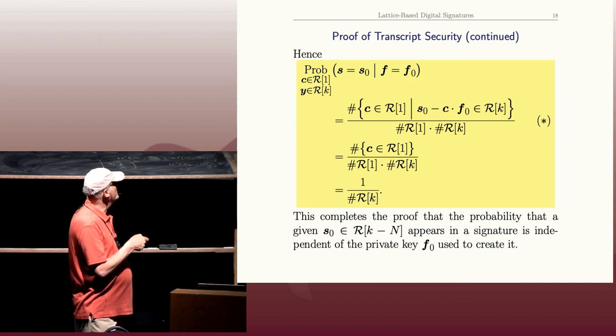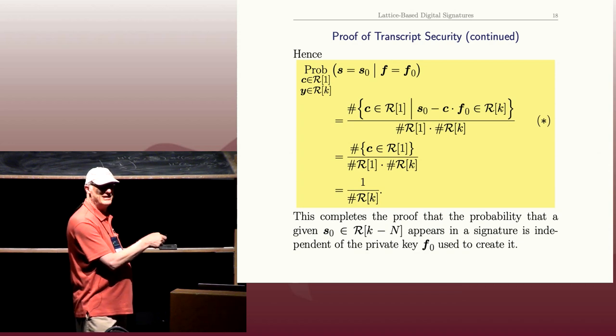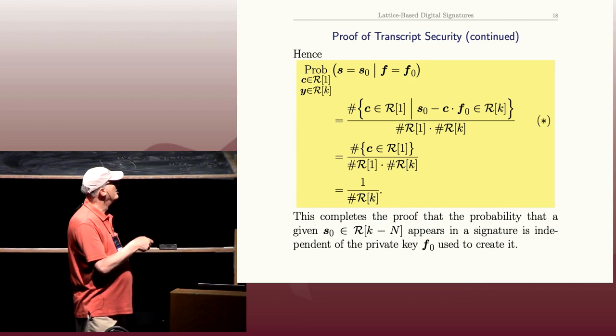So the probability we're trying to compute, which I've just repeated from the previous slide, we found that this condition here is completely irrelevant, because it's always true. So we simply get the number of elements in R of 1 over the denominator.